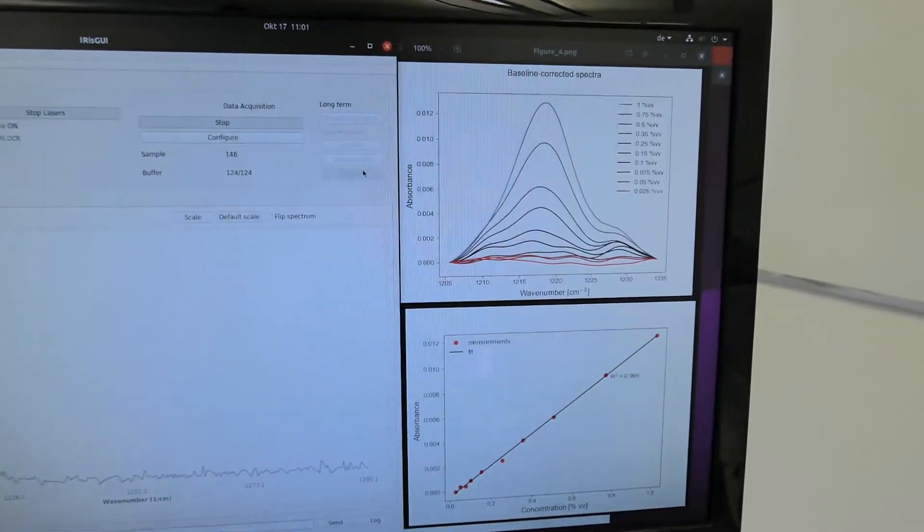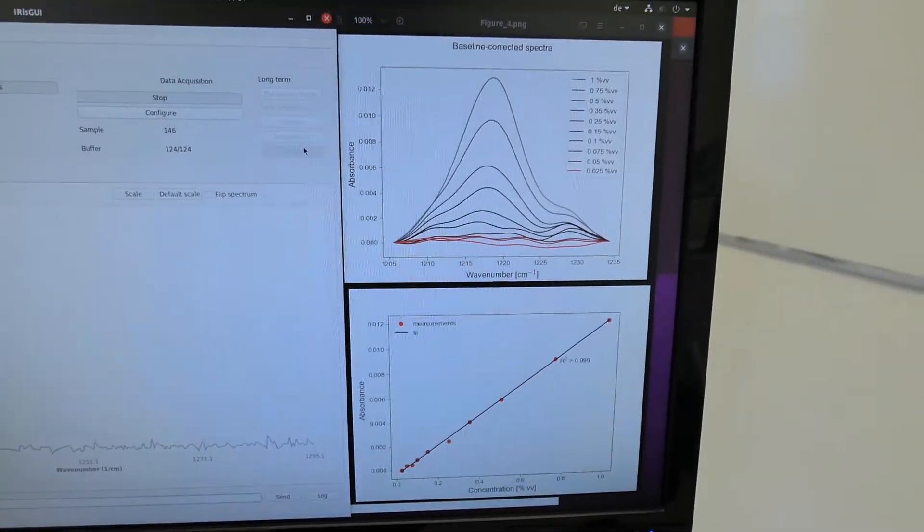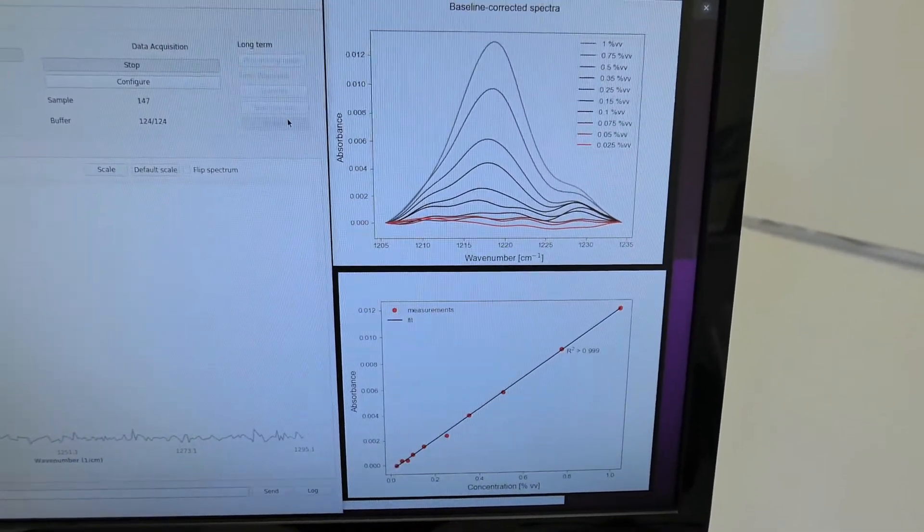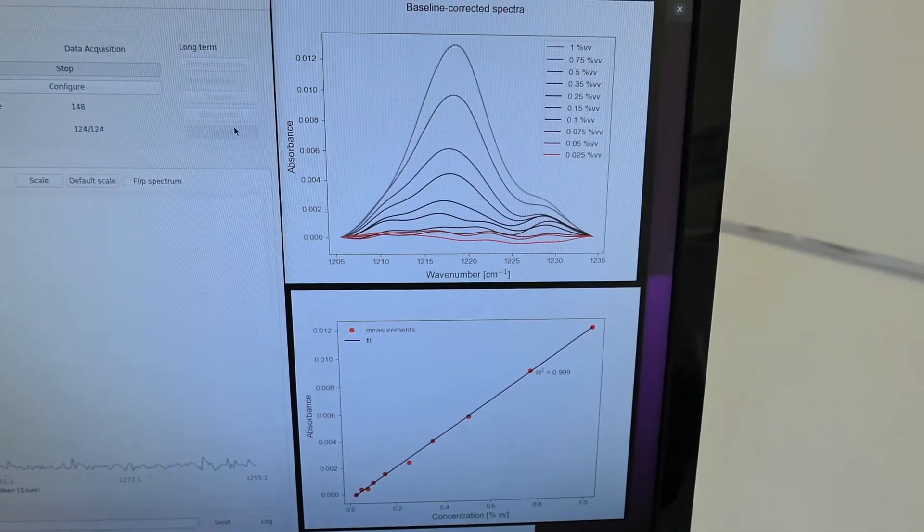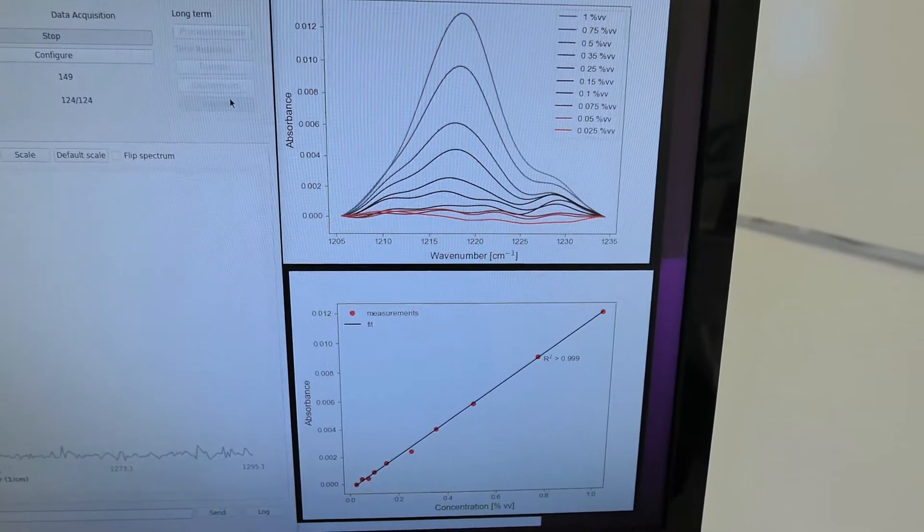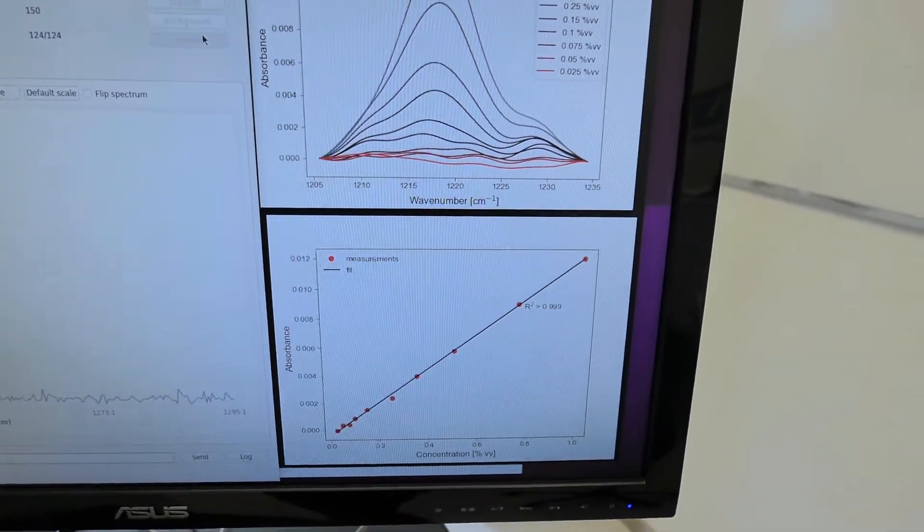And what you can get after a little bit of averaging is shown on the right here. So here are some spectra I recorded earlier. You can get to very low concentrations with quite a linear regression, about 0.1%.